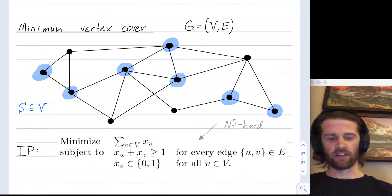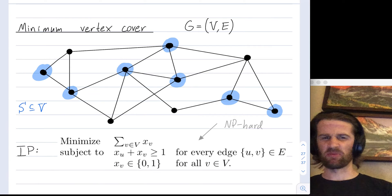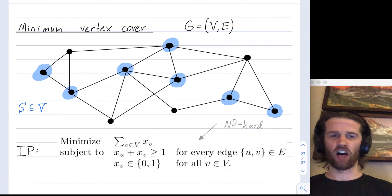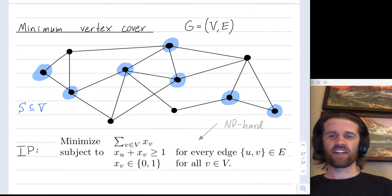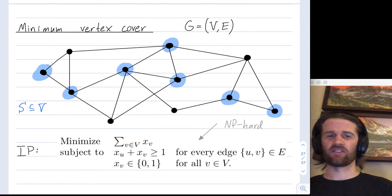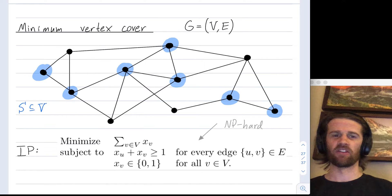It's been proven that solving this problem is NP-hard in general, so for a general graph you expect it to be hard to find the optimal vertex cover. This is considered a medium-hard integer linear programming problem in the sense that we can find an efficient way to find an approximate optimal solution — it won't necessarily be optimal, but it'll be optimal within a factor of two.